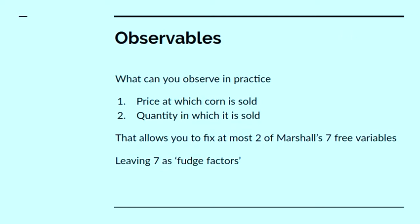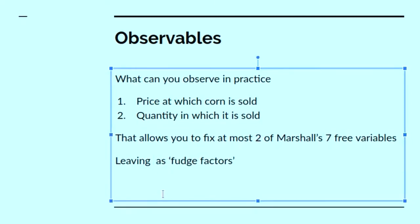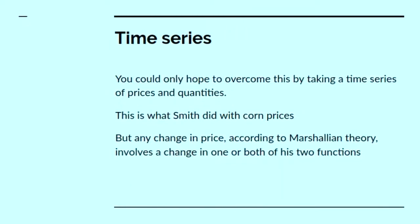If you've got two observables, an equation with seven variables, you've only got two constraints, and that leaves five as a fudge factor.